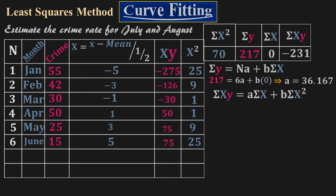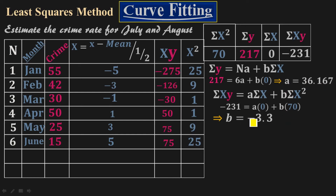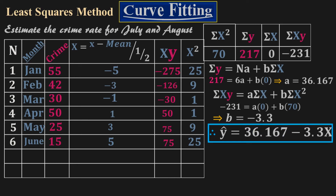For B, use the formula σXY = A·σX + B·σX². Plugging in: −231 = A×0 + B×70. So A×0 = 0 and B = −231 / 70 = −3.3. Now I have A = 36.167 and B = −3.3. Plugging these into the line equation gives the final equation: Ŷ = 36.167 − 3.3X.